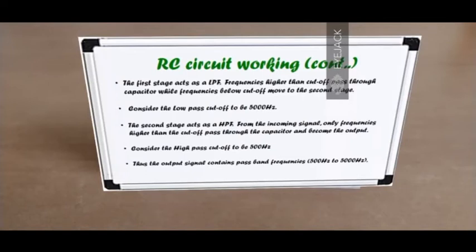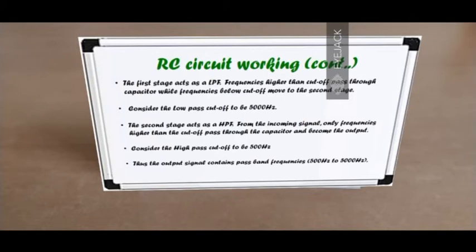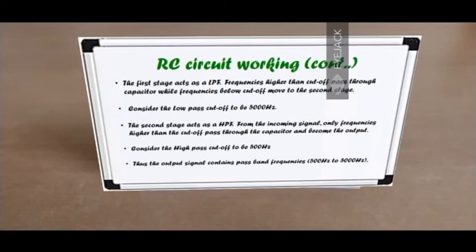The second stage has a capacitor in series and a resistor in parallel, acting as a high pass filter. From the incoming signal of 0 to 5000 Hz, only frequencies higher than the cutoff pass through the capacitor. Let's say the cutoff is 500 Hz — so all frequencies above 500 Hz are allowed to pass through while those below 500 Hz are blocked. The frequencies in the second stage are 0 to 5000 Hz, and only frequencies beyond 500 Hz are allowed, so the result is frequencies between 500 and 5000 Hz — the pass band. Bandpass filtering has been achieved.